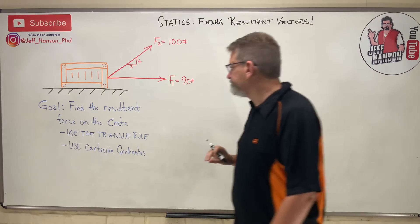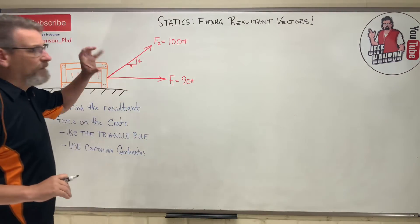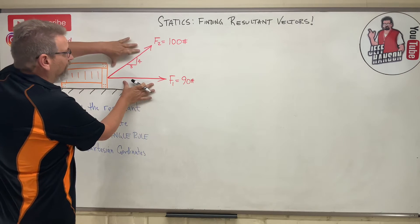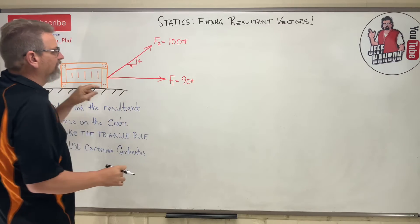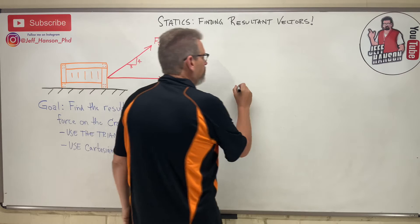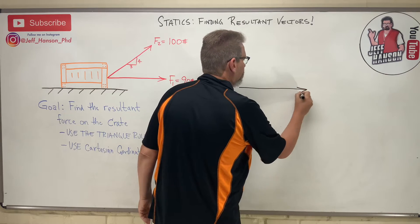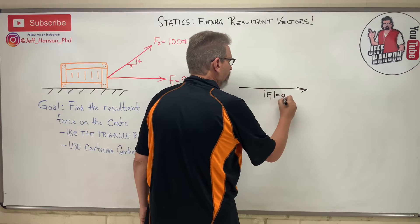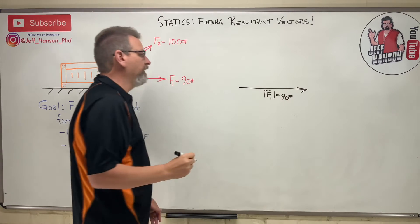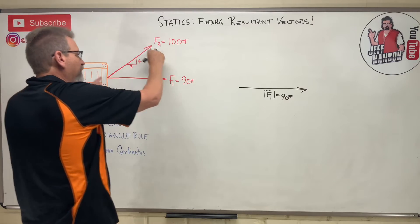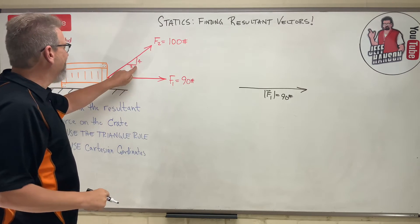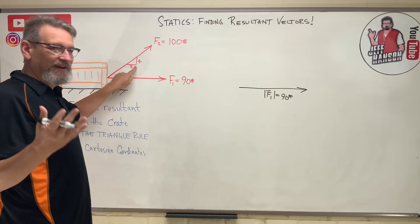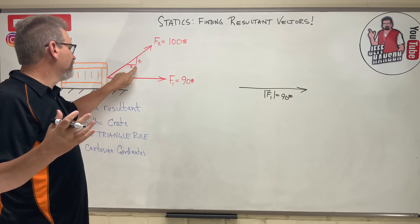The triangle rule is also called the tip-to-tail rule. We construct a triangle from the two vectors. Starting with vector F1 — F1 has a magnitude of 90 pounds. Now we place F2 tip-to-tail. There's a slope triangle shown here, which is just another way to express an angle.